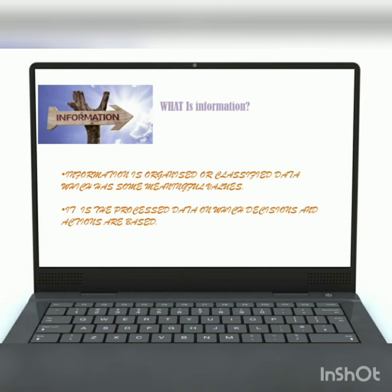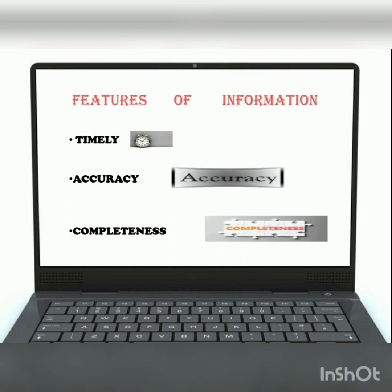Information is the processed data on which decisions and actions are based. For a decision to be meaningful, we must qualify the following characteristics of information. First, timely — information should be available at the time when it is required. Second, accuracy — information should contain the right data. Third, completeness — incomplete information should never be used for taking any decision.